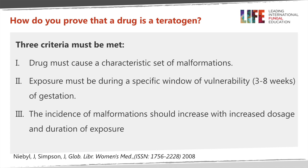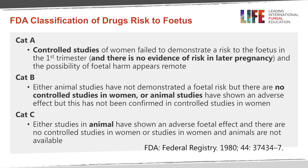There are criteria required to firmly attribute congenital abnormalities to a specific drug. You need to meet all three criteria: the drug must cause a specific characteristic set of malformations; the exposure must occur during a specific window of time — does the malformation occur within the three to eight week period; and the incidence of malformation should increase with increased dosage or duration of therapy. A single dose causing a congenital abnormality may not be confirmatory.